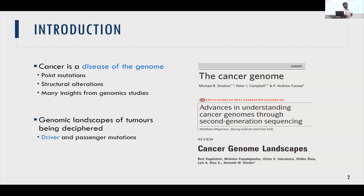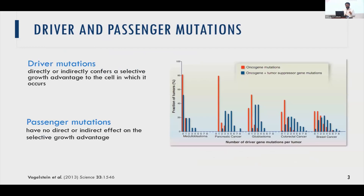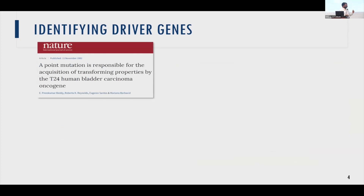There are lots of genomic studies that have presented a lot of insights into cancer, and one very important area of research is trying to understand the genomic landscapes of tumors in terms of drivers and passenger mutations. Driver mutations are mutations that confer a specific growth advantage to cancer cells so they outcompete other cells. Passenger mutations are those that don't have any direct effect on the growth of cancer cells.